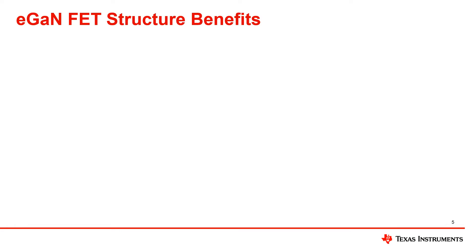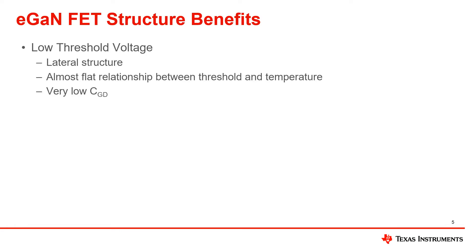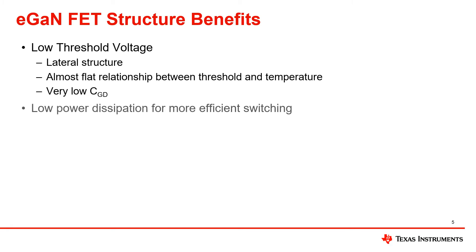Here are some additional GAN benefits. GANFETs have a low threshold voltage that is due to its lateral structure, low CGD, and its relationship between threshold and temperature, which is almost flat. The low threshold voltage means that there is low power dissipation, which leads to more efficient switching.